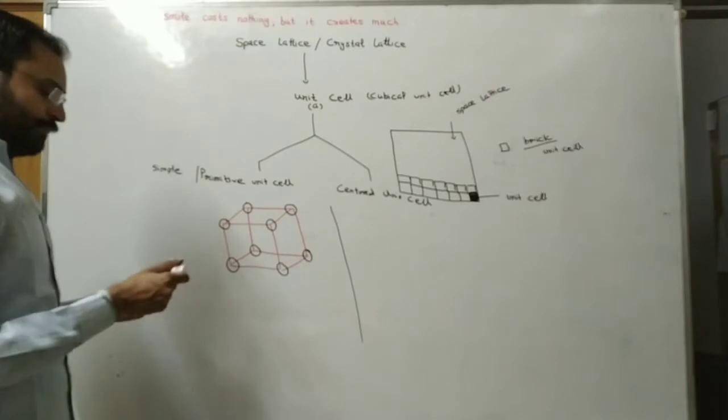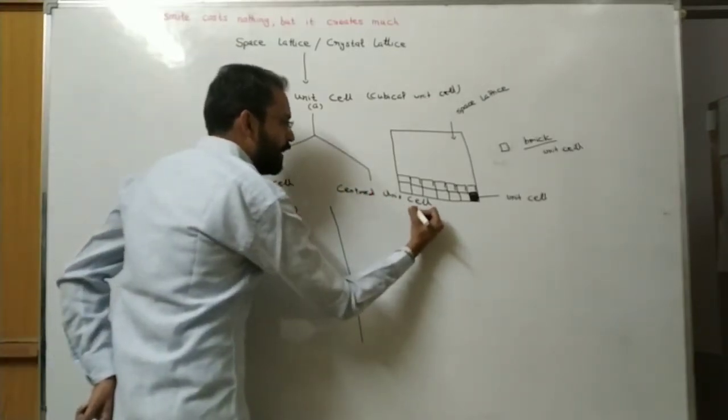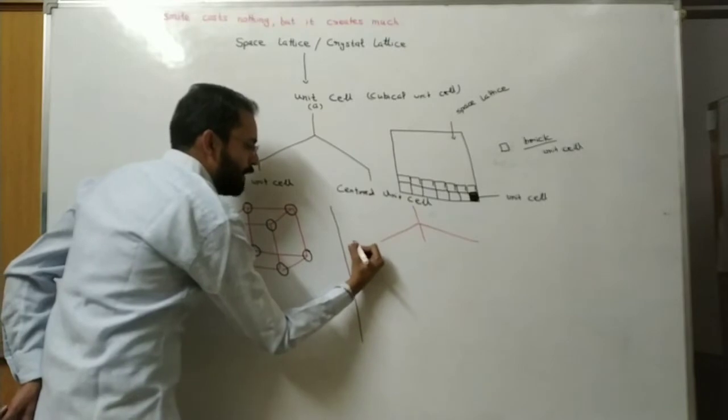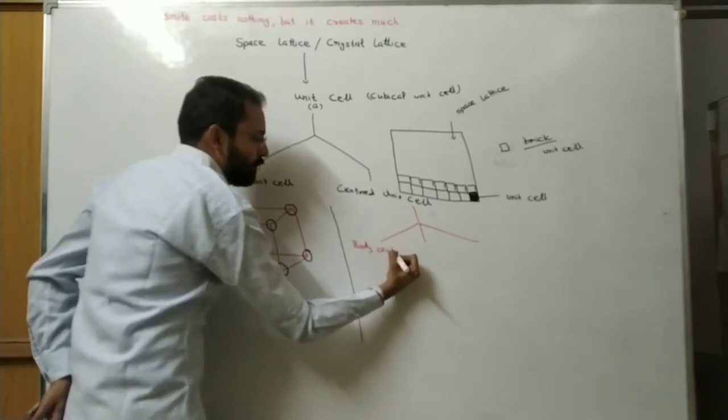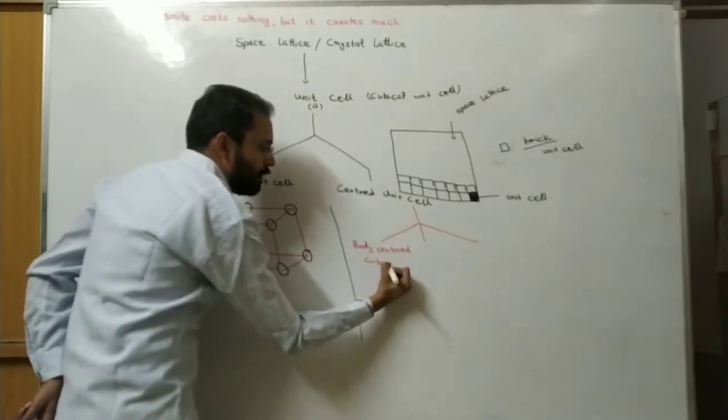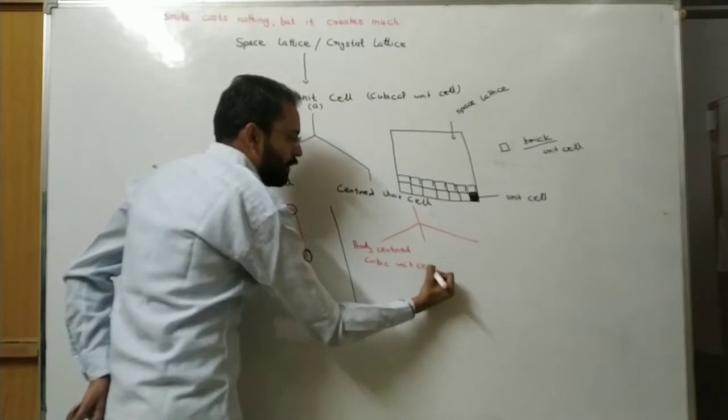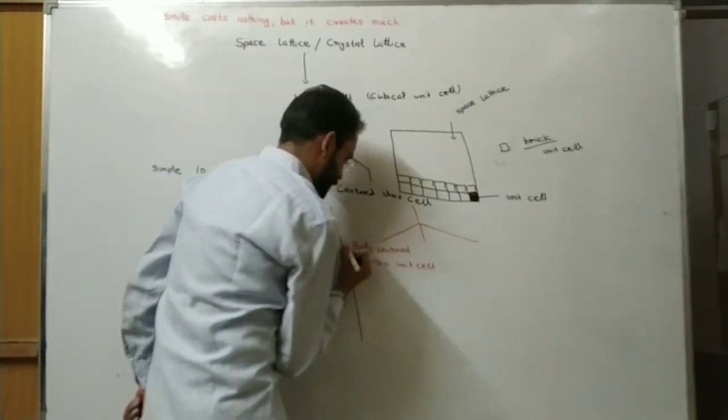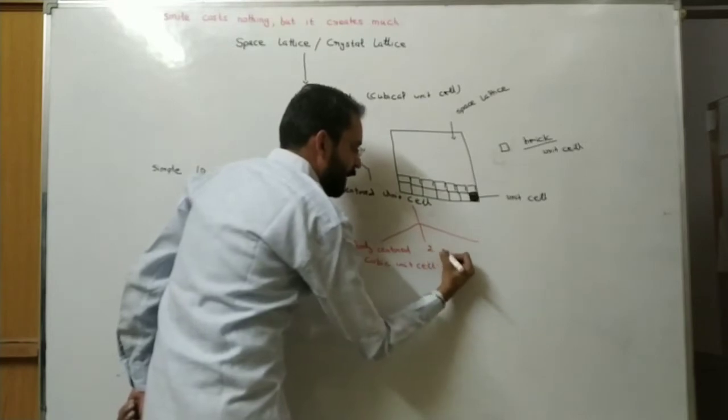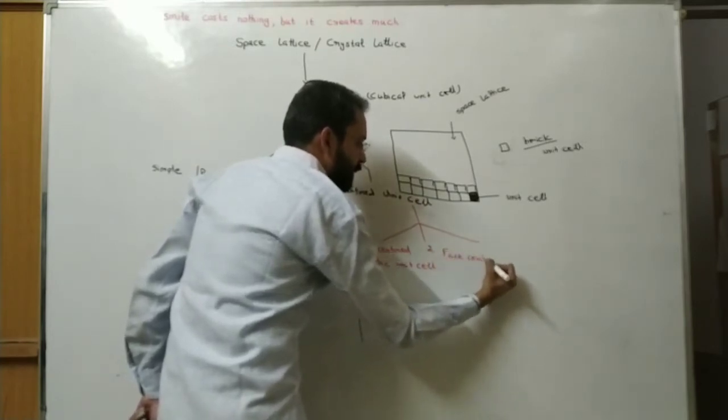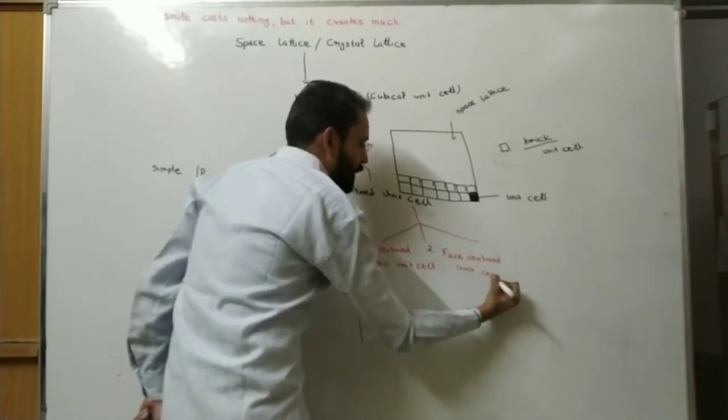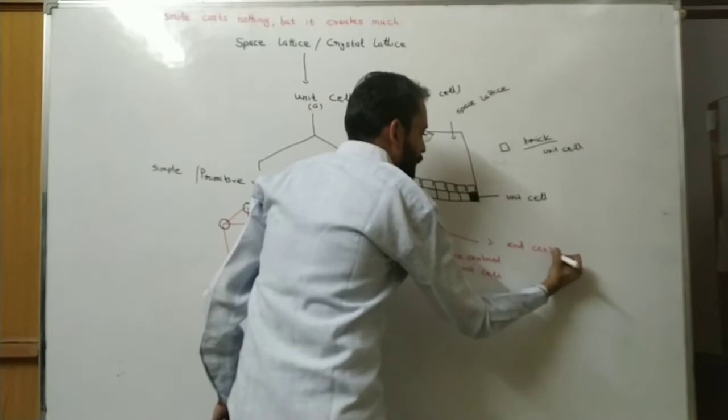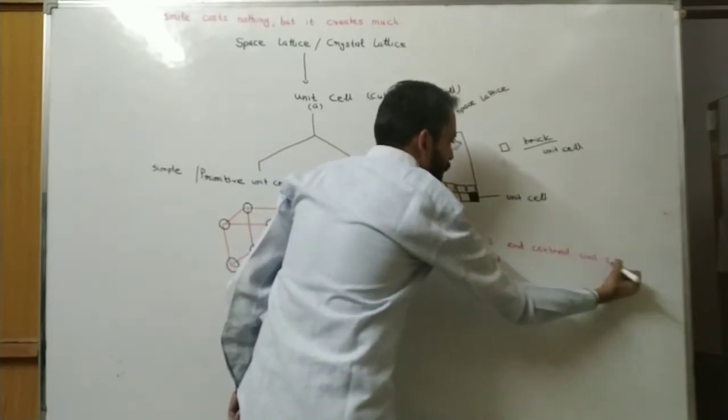Further, centered unit cell can be classified into 3 categories. Body centered cubic unit cell - cubic because we are dealing with cubic unit cell only. Second, face centered unit cell. Third is end centered unit cell.